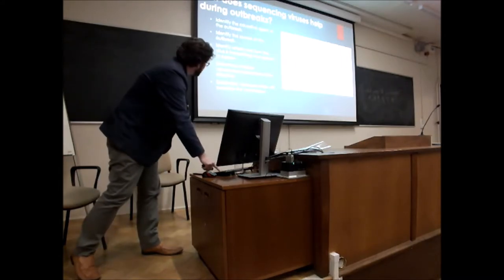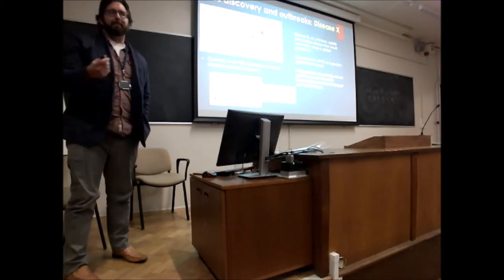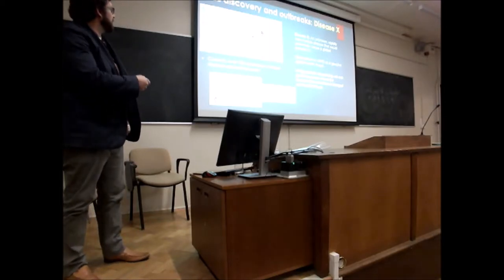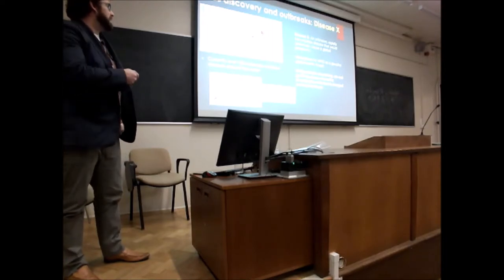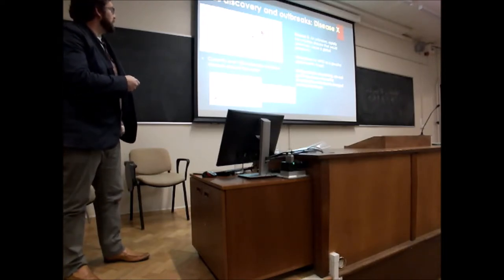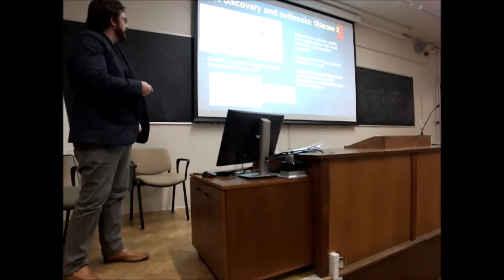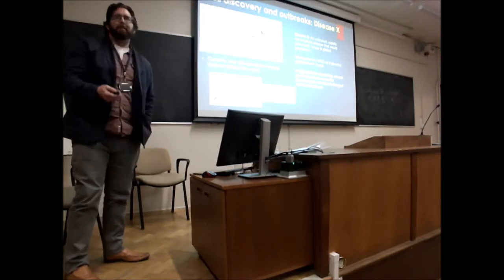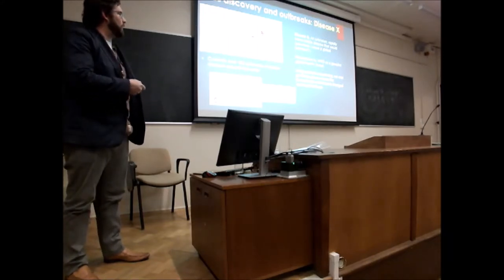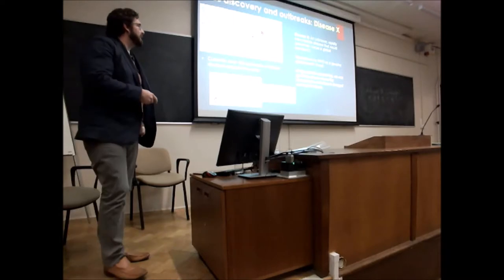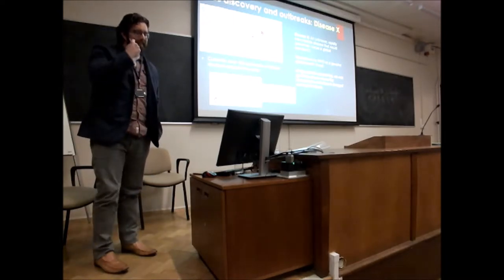Currently there are about 100 viral outbreaks in the world. This map shows all current outbreaks — you've probably heard about Congo, but probably not the other 99. They're not huge or terribly worrying; we know they're there. The problem is 'Disease X' — an unknown, rapidly transmissible disease that could potentially cause a global pandemic.